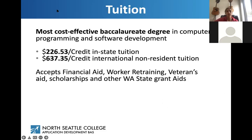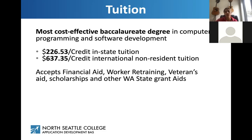For tuition, per-credit in-state tuition is $226.53, and for international/non-resident students it is $637.35. As mentioned before, we accept financial aid, worker retraining, veterans aid, scholarships, and other Washington State grants.